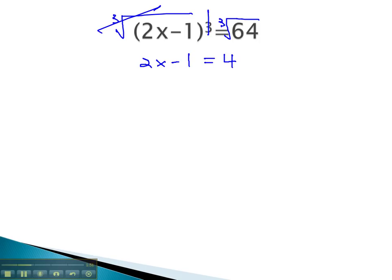We can then solve the remaining equation by simply adding 1 to get 2x equals 5, and finally dividing both sides by 2 to get x equals the fraction 5 halves.